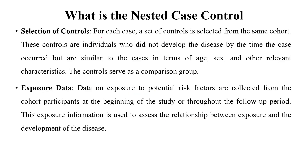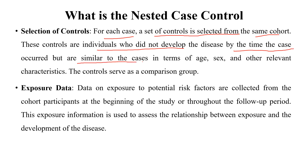For each case, a set of controls is selected from the same cohort. These controls are individuals who did not develop the disease by the time the case occurred, but are similar to the cases in terms of age, sex, and other relevant characteristics. The controls serve as a comparison group.